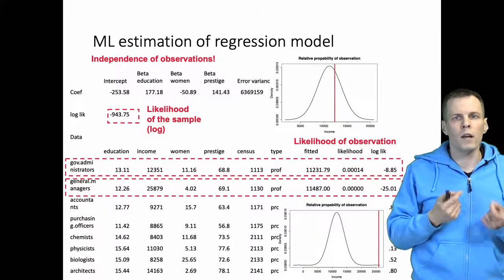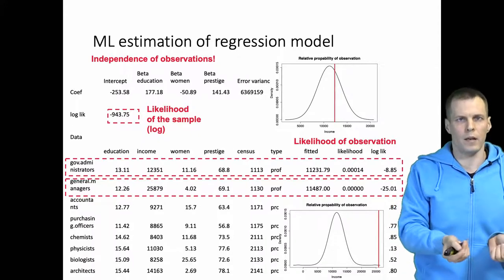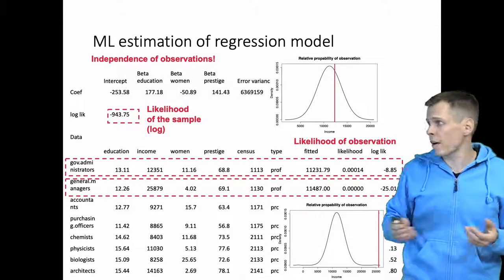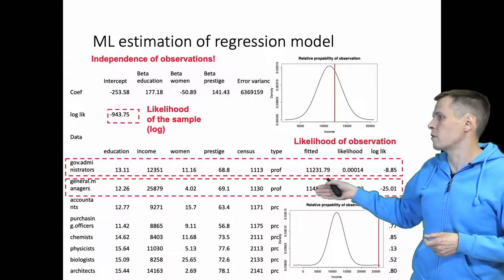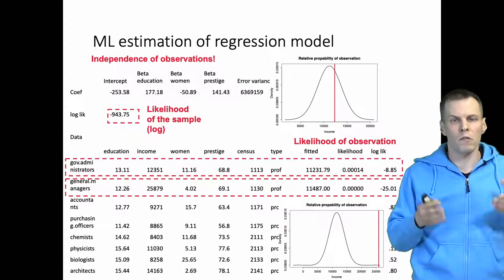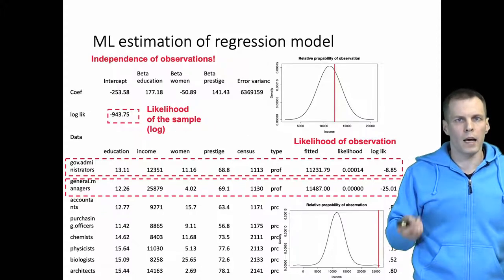However, in random intercept models we don't have independence of observations. There is an unobserved effect in the random part that is shared by, for example, government administrators and general managers. So the random part, the variation or the regression line would no longer be independent. So how do we deal with that problem?